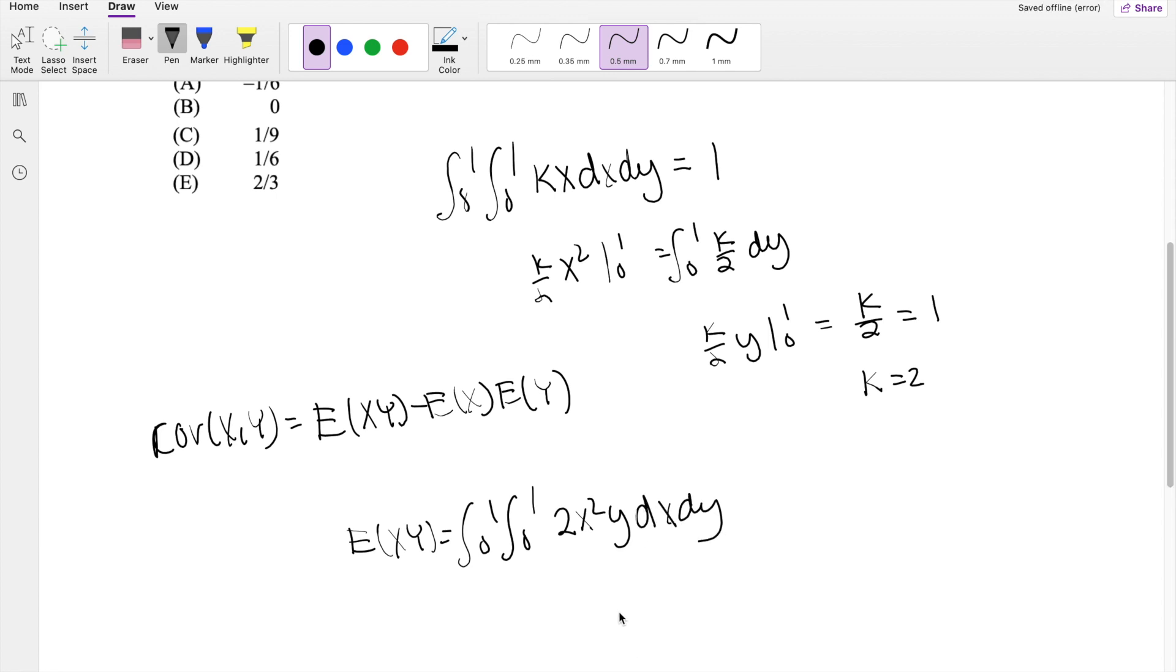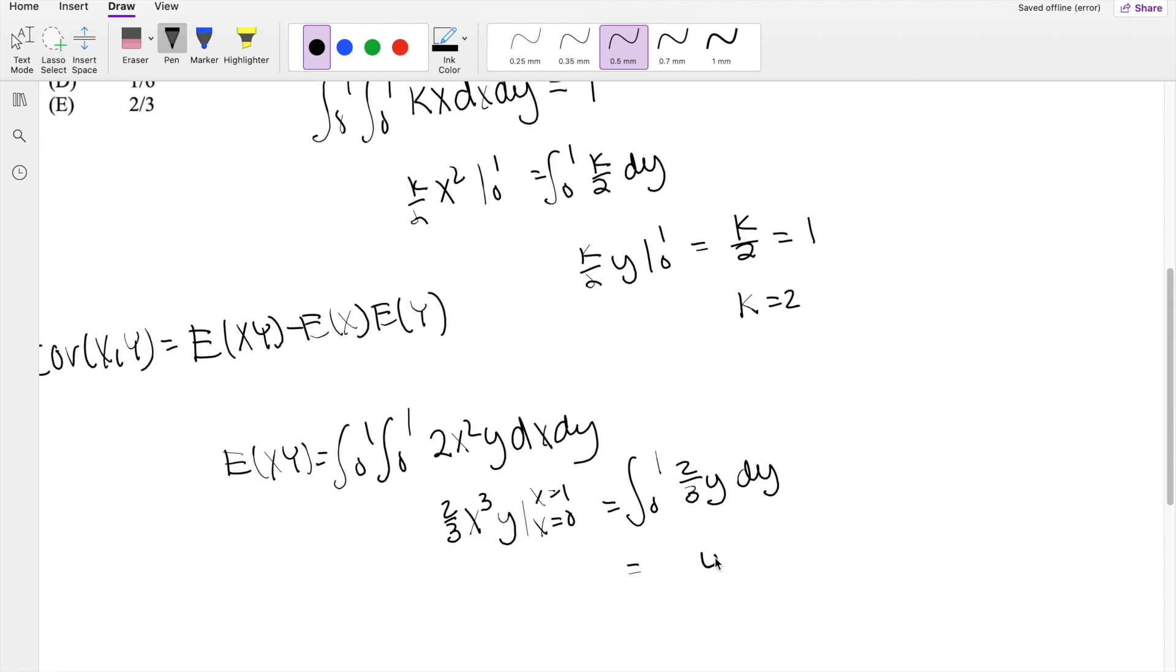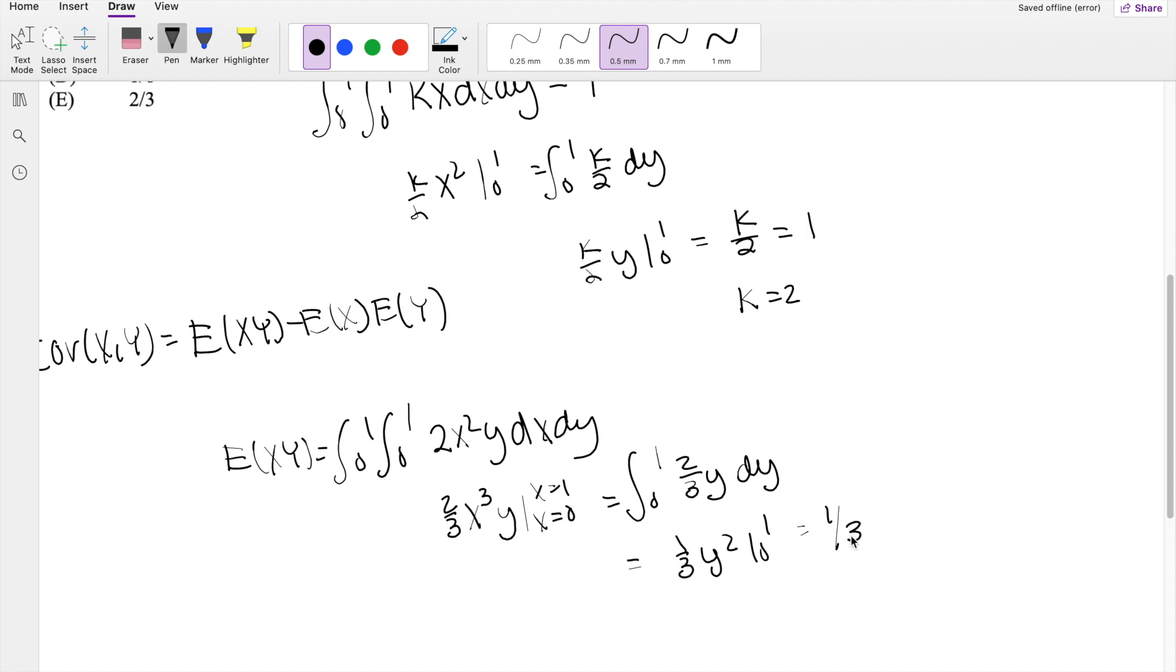So then this is going to be integrated dx dy. So taking this integral in respect to x, you get x cubed, 2 thirds y, where x is going from 0 to 1. So then this is equal to integrating 0 to 1 for y, 2 thirds y dy. So then this is equal to y squared, 1 third, going from 0 to 1. So then this must be equal to 1 third. Okay, not too bad.